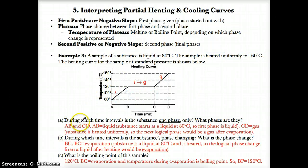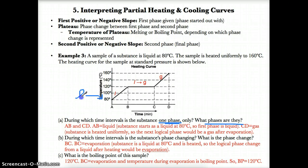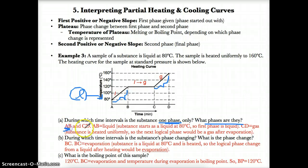Part A asks: during which time intervals is the substance only one phase and what phases are they? The substance is liquid at 80 degrees, so the first phase indicated by the positive line is liquid — interval A to B is a liquid. Since the substance starts as a liquid at 80 degrees Celsius, the first phase must obviously be a liquid as indicated by this positive line.